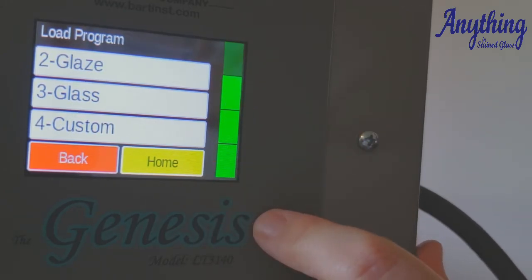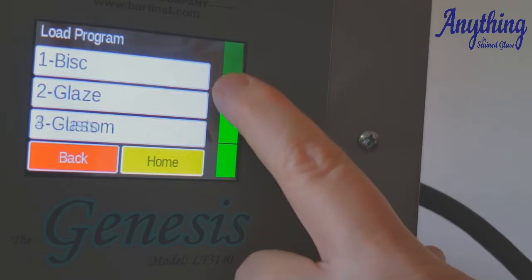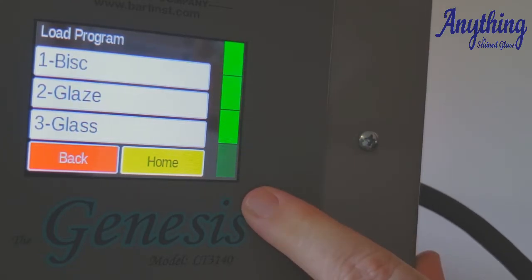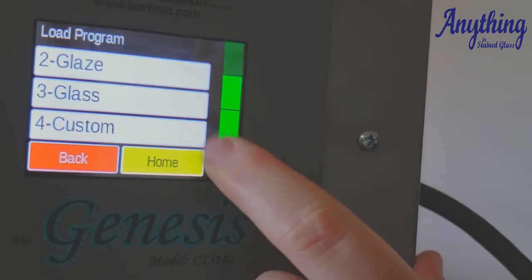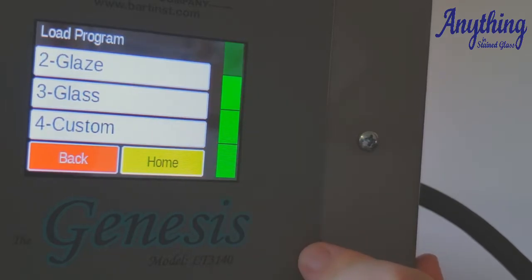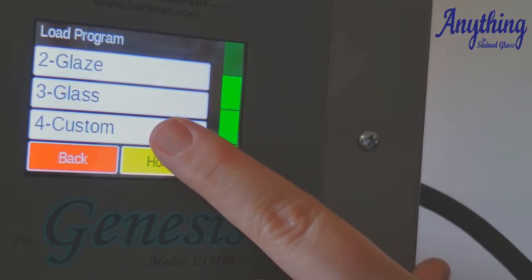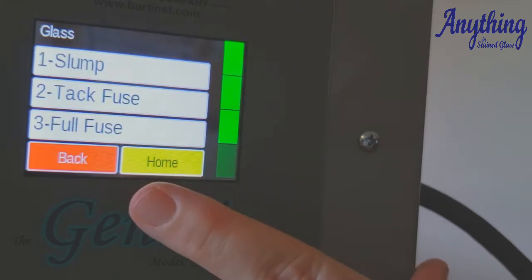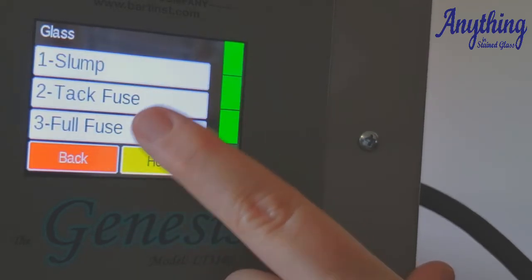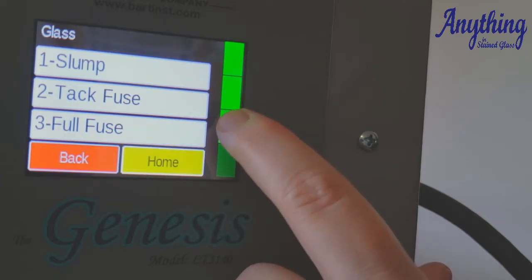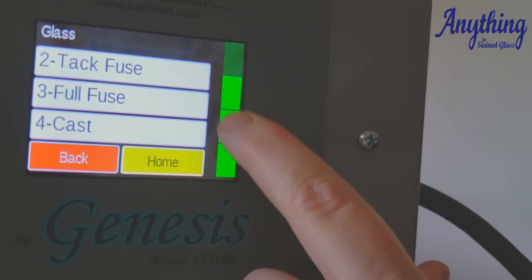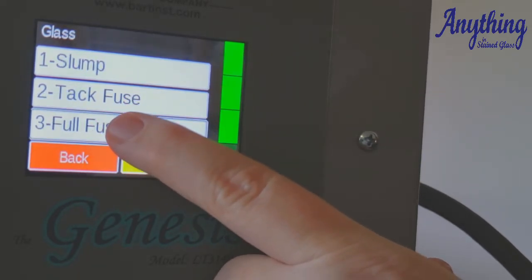Now this control board is set up for both potters and glass artists, so the first two on this list are for potters. You really don't need those, so we're going to scroll down here, and you have two choices. You can either do pre-programmed glass firing schedules, pretty basic. You choose your glass, you say okay I'm going to slump, tack fuse, full fuse, or do some casting. So let's just do a full fuse.